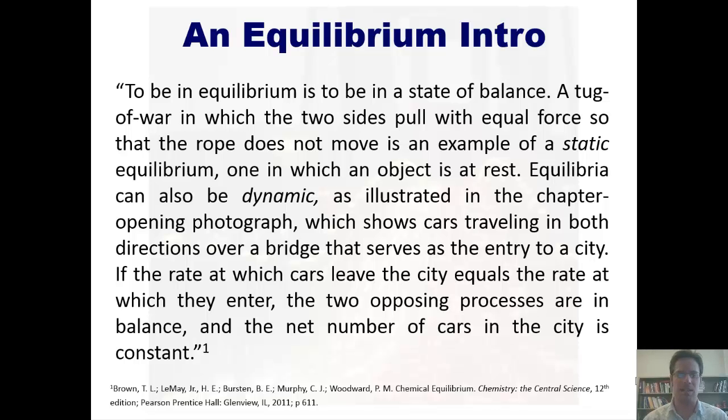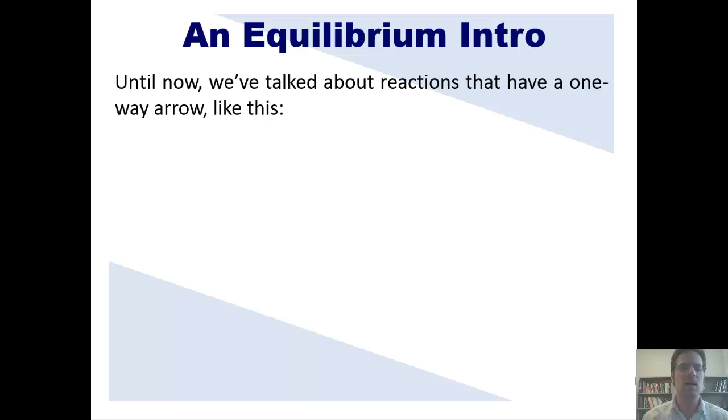Equilibria can also be dynamic, as illustrated in the chapter opening photograph which shows cars traveling in both directions over a bridge that serves as an entry to the city. If the rate at which cars leave the city is the same as the rate at which they enter, then the two opposing processes are in balance and the net number of cars in the city remains constant.